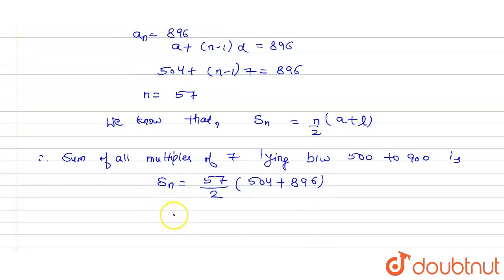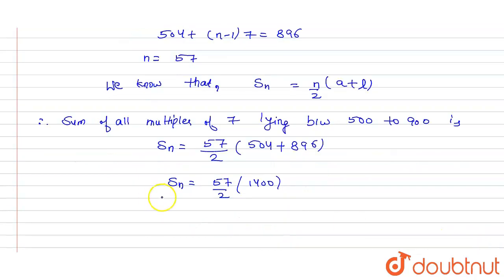Solving it, we will get SN equals 57 by 2 multiplied by 1,400 and after simplifying it completely, we will get this is equals to 39,900.